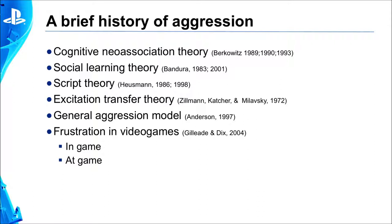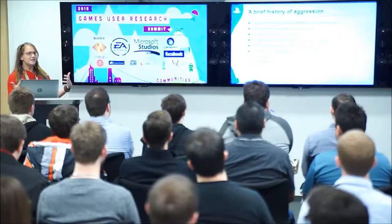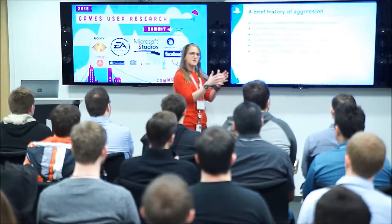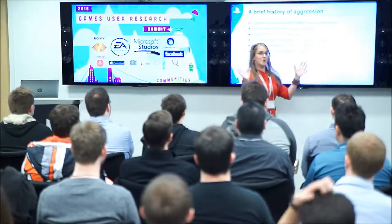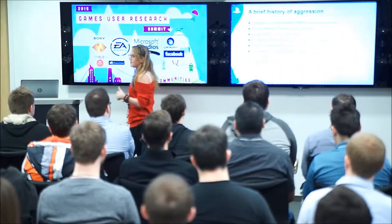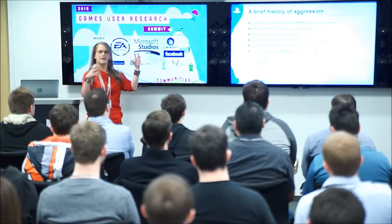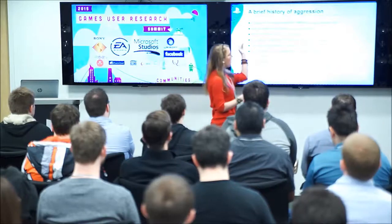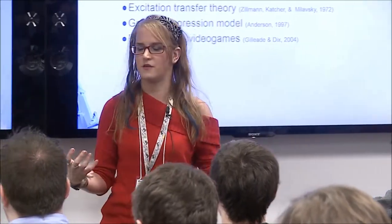Script theory is a more specific social learning theory, where you learn scripts for specific events and how to respond aggressively in those events. The excitation transfer theory has to do with physical excitement transferring to a nearby event in time, making you more excited and more likely to be aggressive. Then we have the general aggression model, which takes all those pieces and puts them into one cohesive whole.